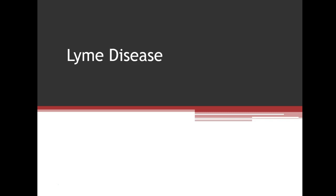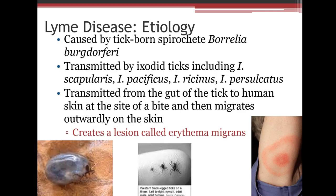Lyme's disease is also caused by a spirochete — Borrelia burgdorferi. It's transmitted by ixodid ticks, including Ixodes scapularis, I. pacificus, I. ricinus, and I. persulcatus. The bacteria is transmitted from the gut of the tick to the human skin, producing the characteristic bullseye rash called erythema migrans.